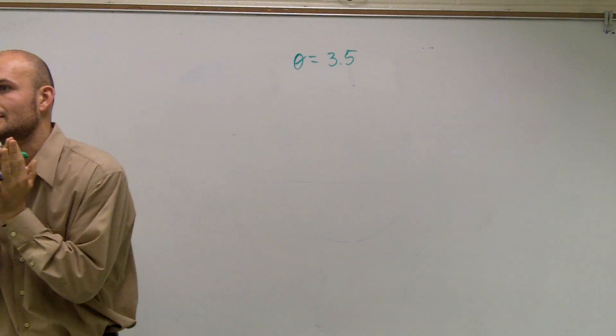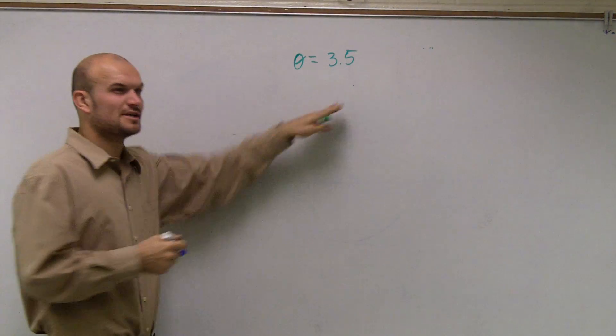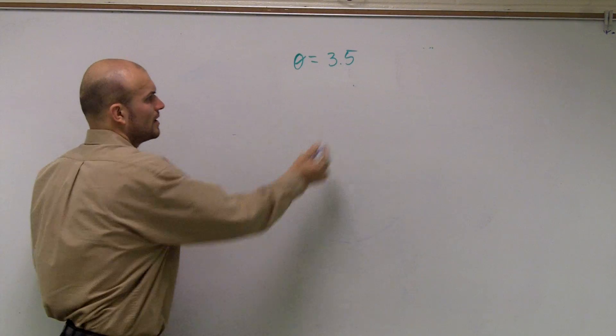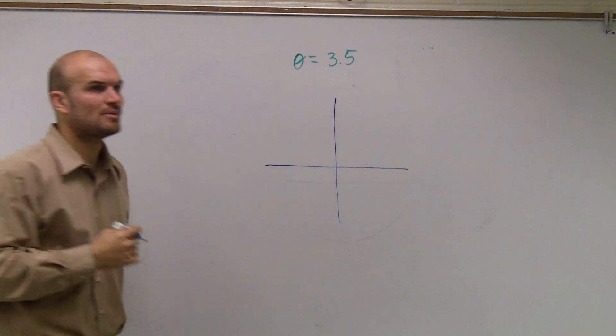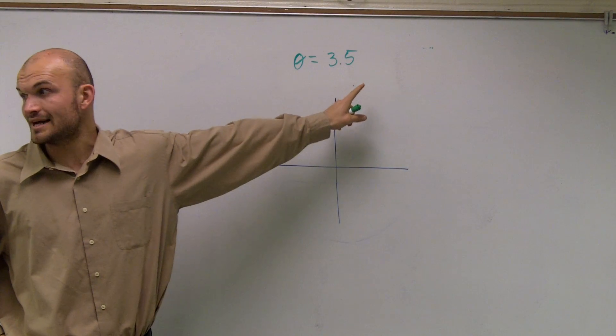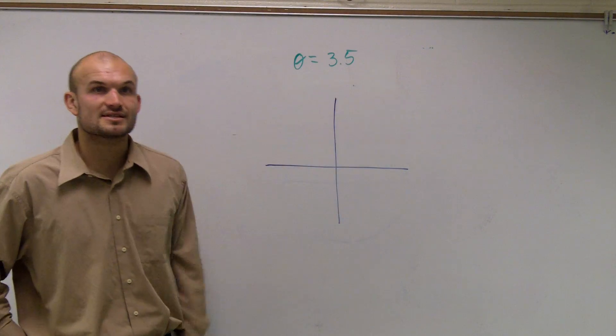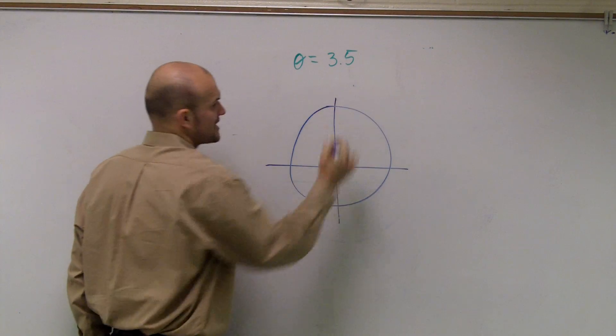So if I want to find the reference angle, what I need to do is determine what is this angle going to look like. Well, let's remember what our radians look like, because here there's no degree, so therefore I know it's not in degrees. What this is, is this is in terms of radians.